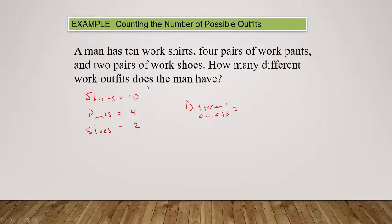The task the man needs to complete is just getting dressed for work. He must select his shirt, then select his pants, then select his shoes. So the total number of different outfits he has, you would take the ten different shirts, multiply it by the four different pants, and multiply it by the two different pairs of shoes. Ten times four is forty, times two.